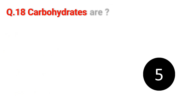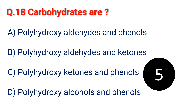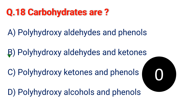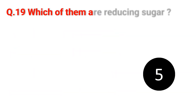Question 18. Carbohydrates are: A. Polyhydroxyl aldehyde and phenol. B. Polyhydroxyl aldehyde and ketones. C. Polyhydroxyl ketone and phenol. D. Polyhydroxyl alcohol and phenols. The answer is B. Polyhydroxyl aldehyde and ketones.